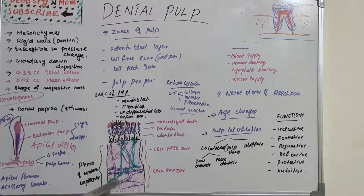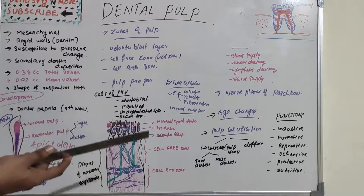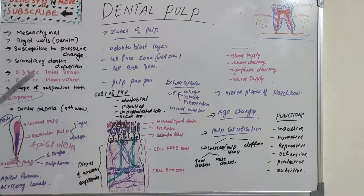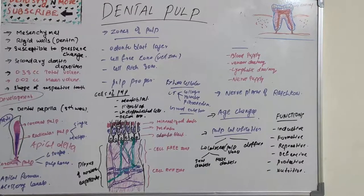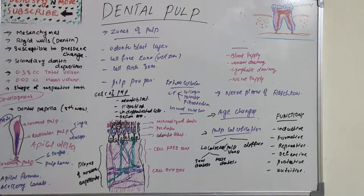The cell-rich zone is present in the sub-odontoblastic layer and has a greater proportion of fibroblasts and undifferentiated mesenchymal cells, which include macrophages, dendritic cells, and lymphocytes. These cells migrate from the pulp proper. Mitosis is seen here when dead odontoblasts are replaced. It also contains young collagen fibers during early dentinogenesis. The pulp core is the central region of the pulp containing major blood vessels and nerves, as well as pulp cells and fibroblasts.